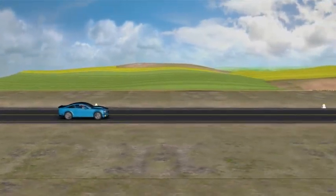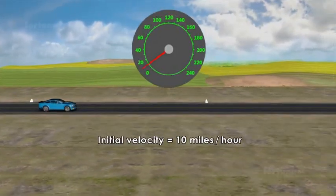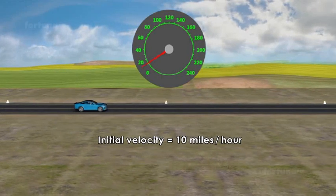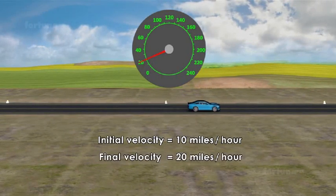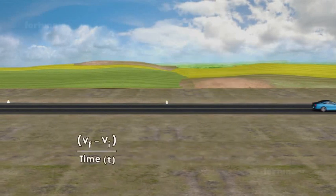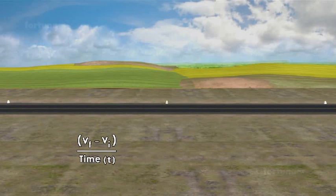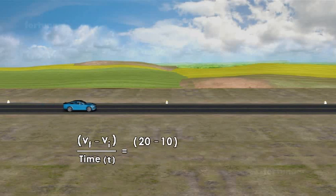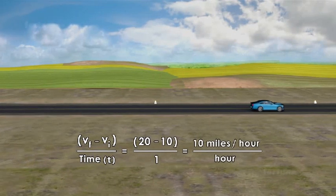In our example, the initial velocity is 10 miles per hour and the final velocity is 20 miles per hour. Substituting the values in the equation, we get 20 minus 10 divided by 1 hour. That comes to 10 miles per hour squared.